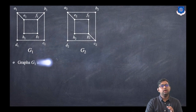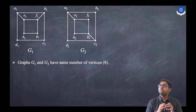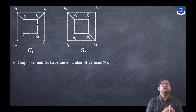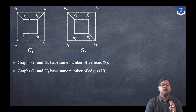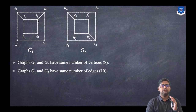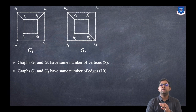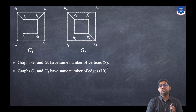Graphs G1 and G2 have the same number of vertices — eight vertices each — so the first condition holds. In the same manner, both have the same number of edges: four outer edges, four inner edges, and two additional edges, making ten edges total. So the second condition also holds. Number of vertices and number of edges are both the same. So what is the catch?